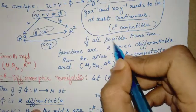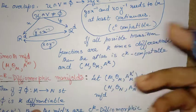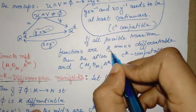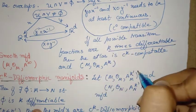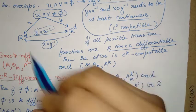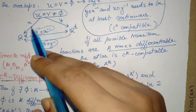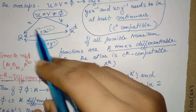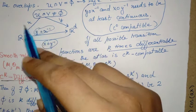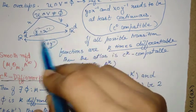Now given chart maps, all the chart maps, all possible transition functions are compatible, you can ask whether they are k times differentiable or not.